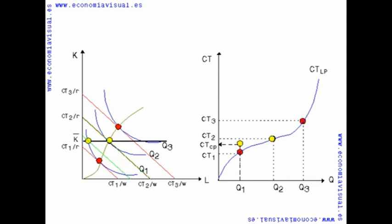In this way we can see how the total cost only coincides at one level of production in the short and long run. As for the other production levels, the total cost in the short run will always be higher than that which would take place in the long run.